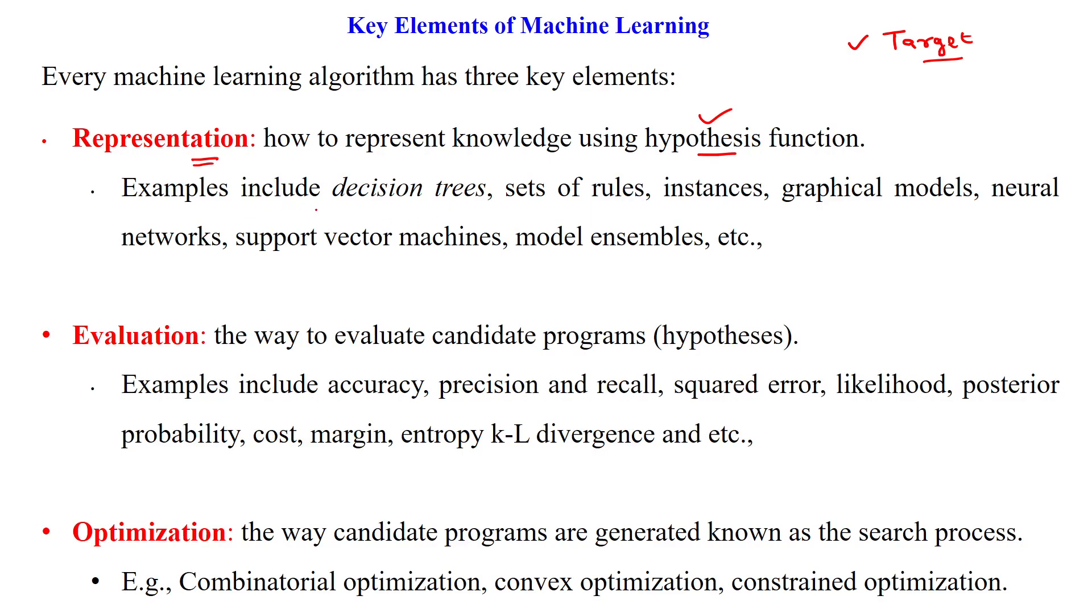Here in machine learning we are having different structures of hypothesis function in the form of decision trees or set of rules or set of instances, graphical models, neural networks, support vector machines, ensemble learning, etc.